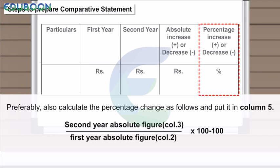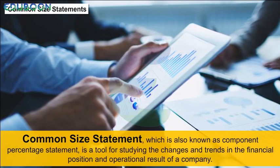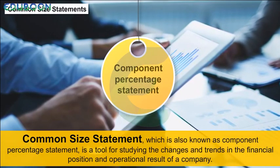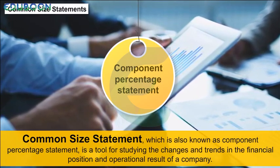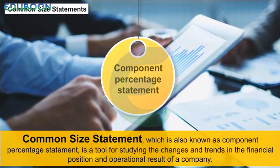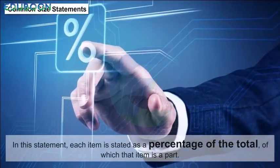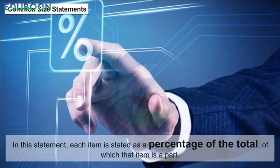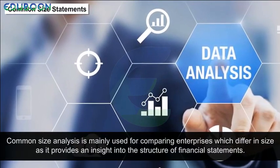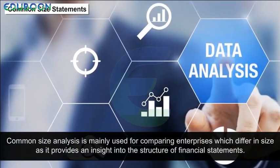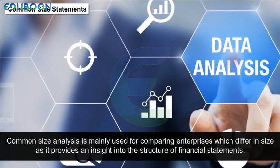Step 3 — Preferably also calculate the percentage change and put it in Column 5. Common Size Statement: Also known as the Component Percentage Statement, this is a tool for studying changes and trends in the financial position and operational results of a company. Each item is stated as a percentage of the total of which that item is a part. Common size analysis is mainly used for comparing enterprises of different sizes, as it provides insight into the structure of the financial statement.